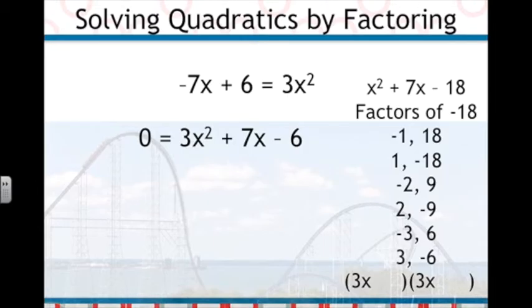We want the factors that will add up to a positive 7, so we need to use the negative 2 and positive 9, making our factors 3x minus 2 and 3x plus 9.